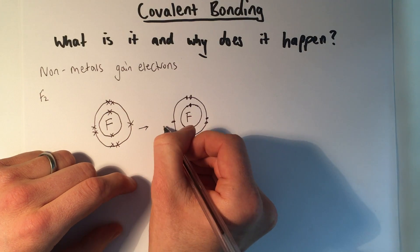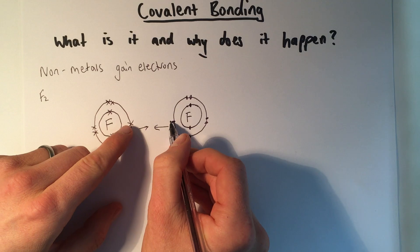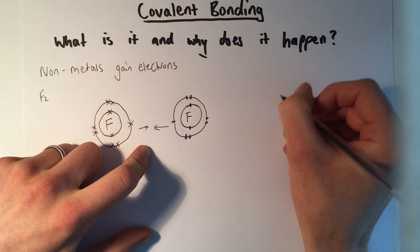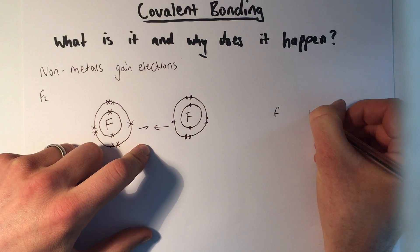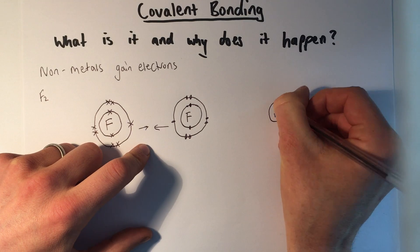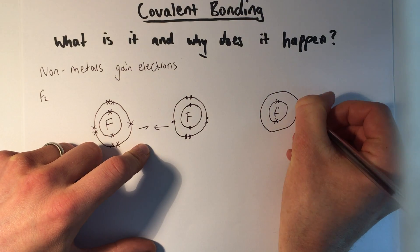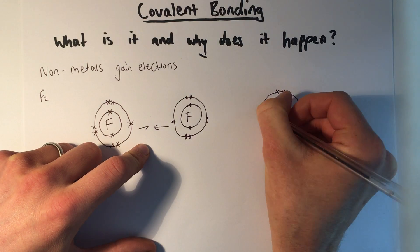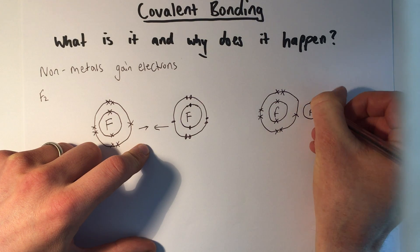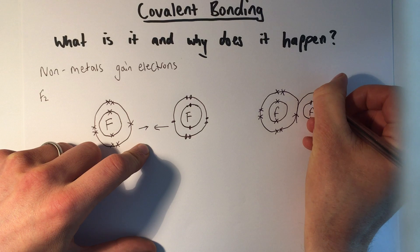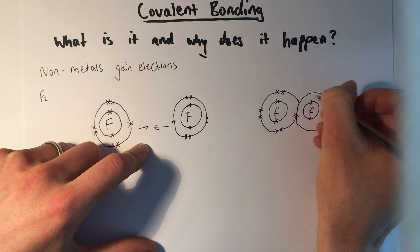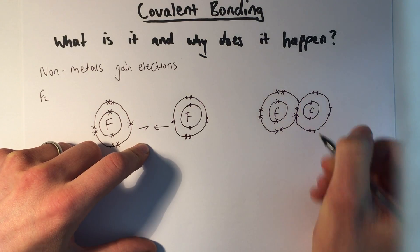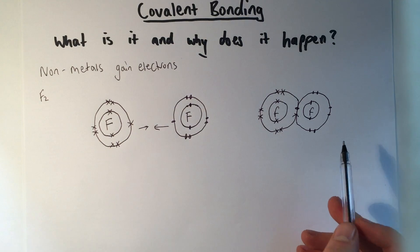Now, if these moved towards each other, we might be able to see what could happen if these shells overlap with each other and they shared these electrons that they had. Let's draw that. Let's put them next to each other this time. That's the first shell, and that's the second shell. That's now showing what's happened once those atoms have moved towards each other.